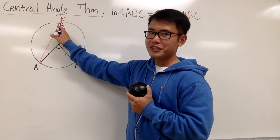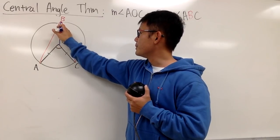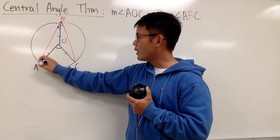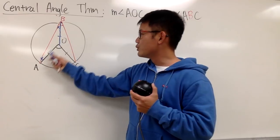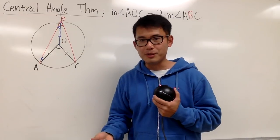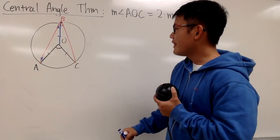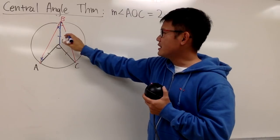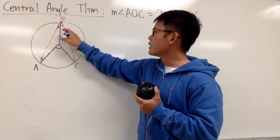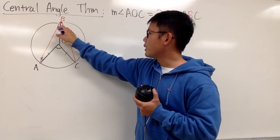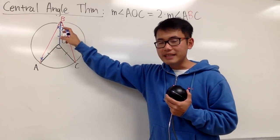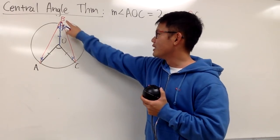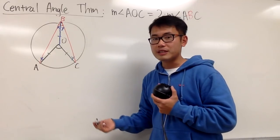Do we know how big angle ABО is? We don't, so we call it x. The moment I label this x, the base angle at A is also x, because OA and OB are equal radii, so the base angles of the isosceles triangle are the same. Similarly, for triangle OBC, we don't know this angle, but we call it y. Once this angle is y, the base angle on the other side is also y — same reason, equal sides mean equal angles.